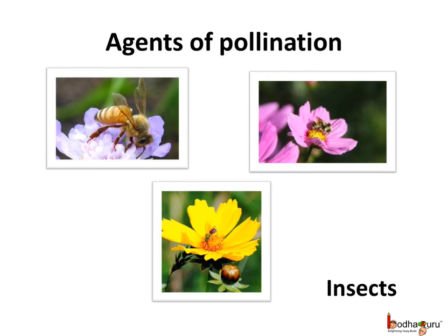The insects visit the flowers for nectar and transfer the pollens to the stigma. Generally, insect-pollinated flowers are brightly colored, have a sweet smell, and are also rich in nectar.